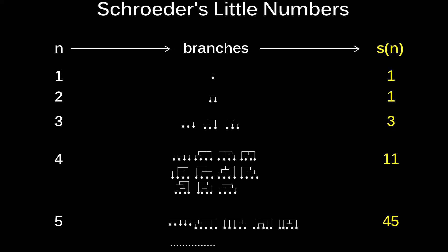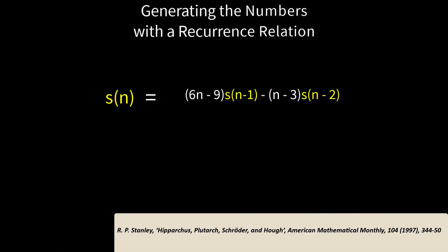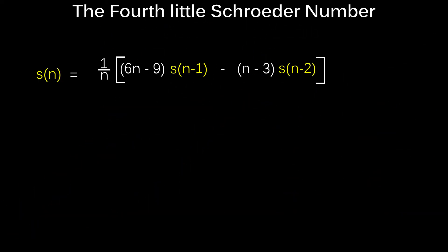It's time to stop and change course. Drawing these arrangements is becoming too time consuming. Instead we can use a recurrence relation to generate Schroeder's little numbers more easily. Clearly we can't use it for n equals 1 or 2, but we've already seen that these Schroeder numbers are both equal to 1 anyway.